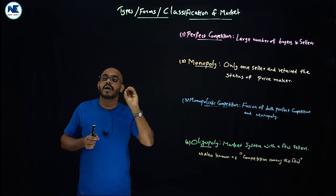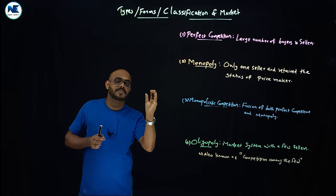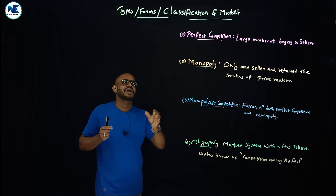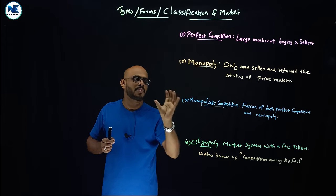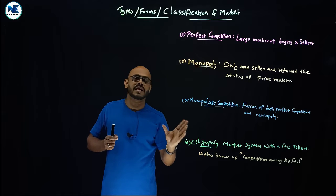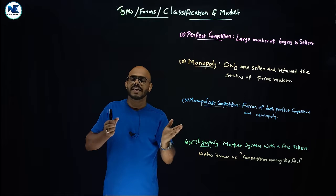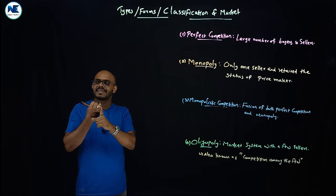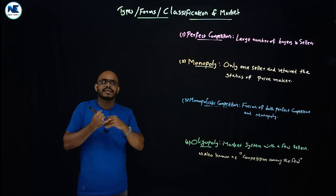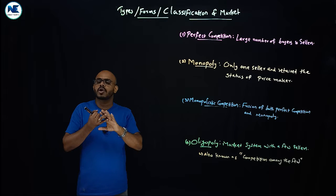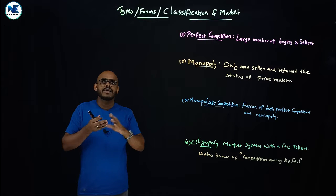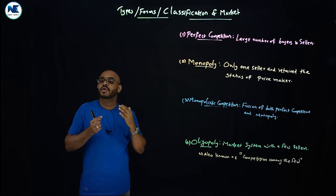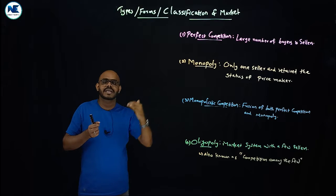In microeconomics we can see four important market forms or types of market. What are they? Perfect competition, monopoly, monopolistic competition, and oligopoly. These are the main topics. Depending on the topic, duopoly is a special case of oligopoly. From the buyer's point of view: monopsony, oligopsony. And where there are buyers and sellers, we have bilateral monopoly.